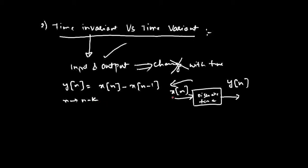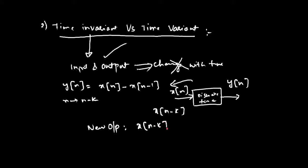Since k is positive, if you delay the signal by k units, the input becomes x of n minus k. When the input is x of n minus k, instead of n you have n minus k in the equation. So the new output will be x of n minus k minus x of n minus k minus 1.